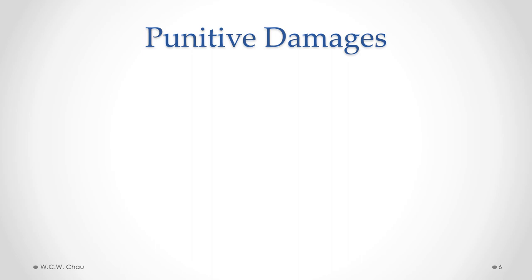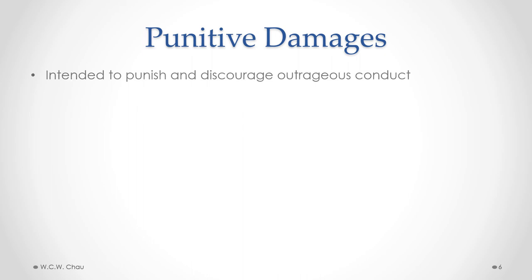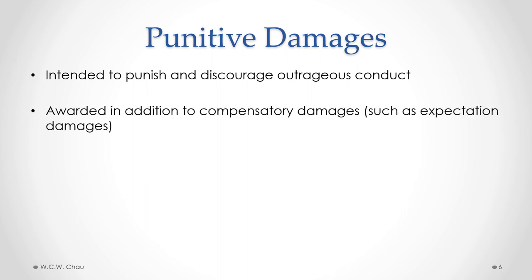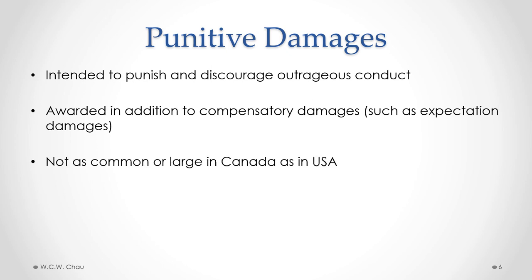Damages such as expectation damages are usually meant to compensate the innocent party for their losses. An exception to that rule is punitive damages, which are intended to punish and discourage outrageous conduct. An award of punitive damages is in addition to compensatory damages. The award of punitive damages by a court is not as common in Canada as it is in the US, and if a Canadian court does award punitive damages, it is nowhere near as large in dollar value as what often occurs in a US court.